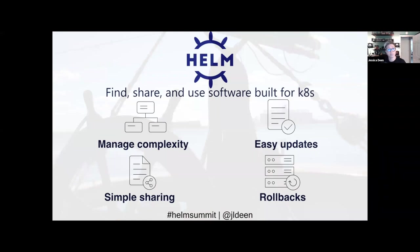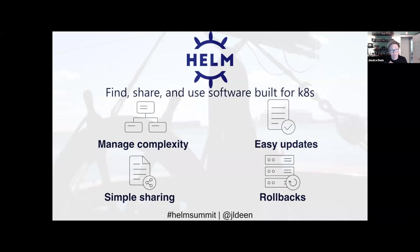For anyone new to Helm or hearing about Helm 3, the four big primary objectives were: manage even the most complex workloads, do easy updates, share your charts, and rollback. That last one — rollback — is a little bit of a lie, right? You're never going to fully roll back to a different release; you're just going to roll back to a different version, but that release you push out is still a new release marker moving forward.